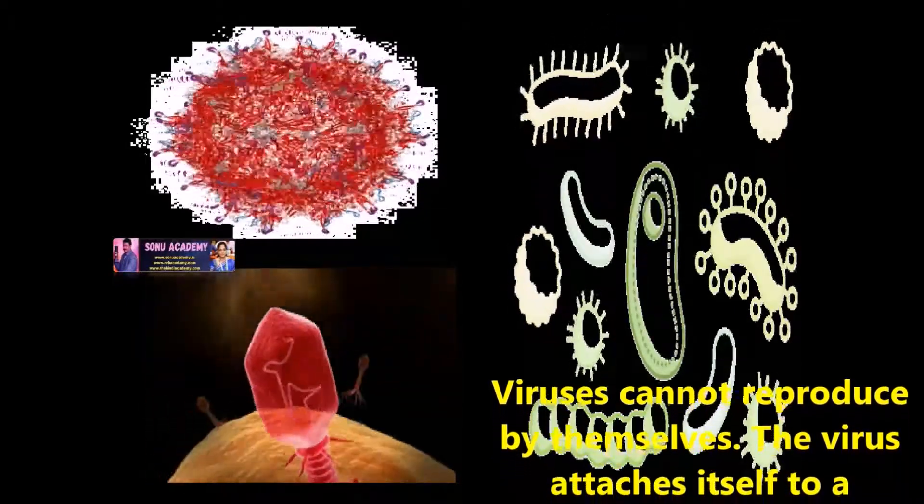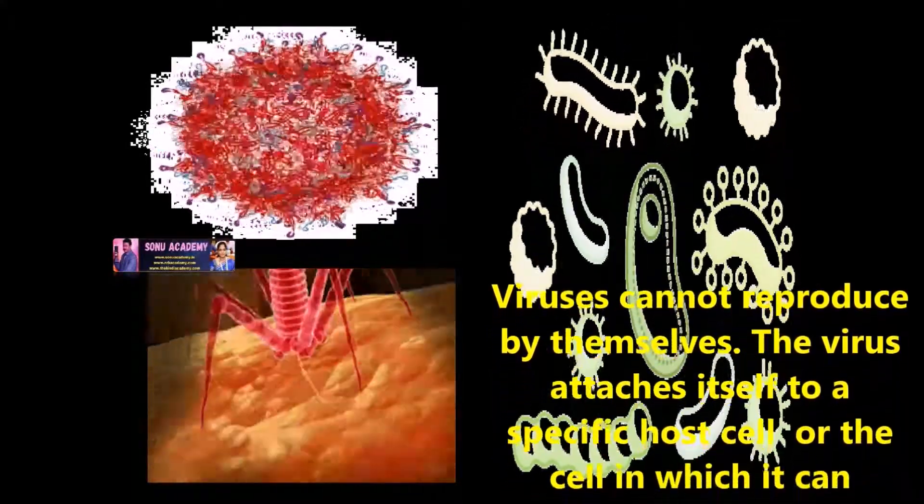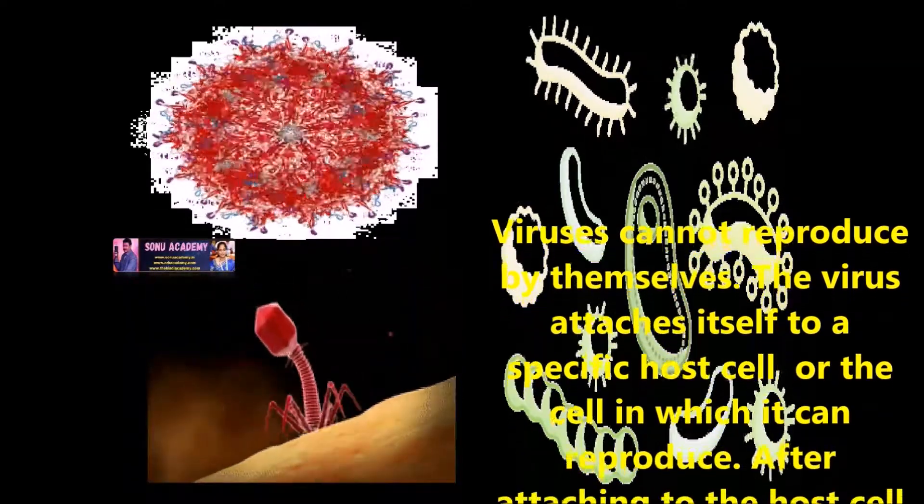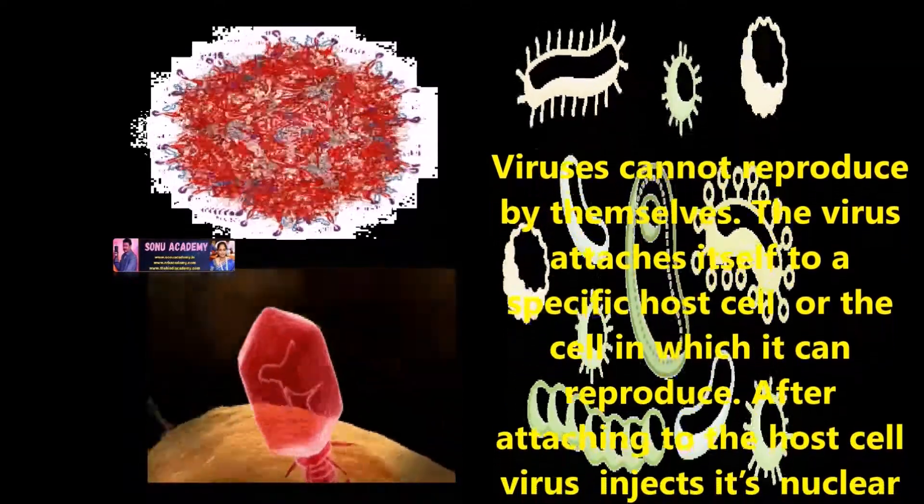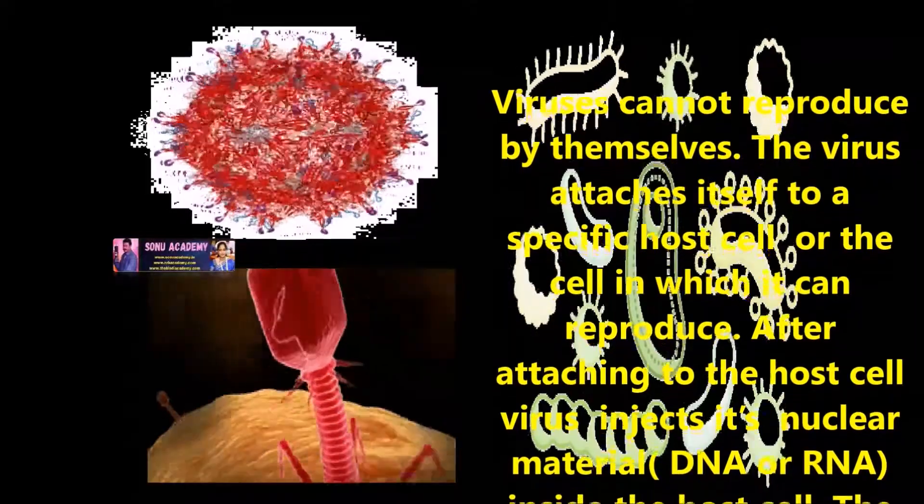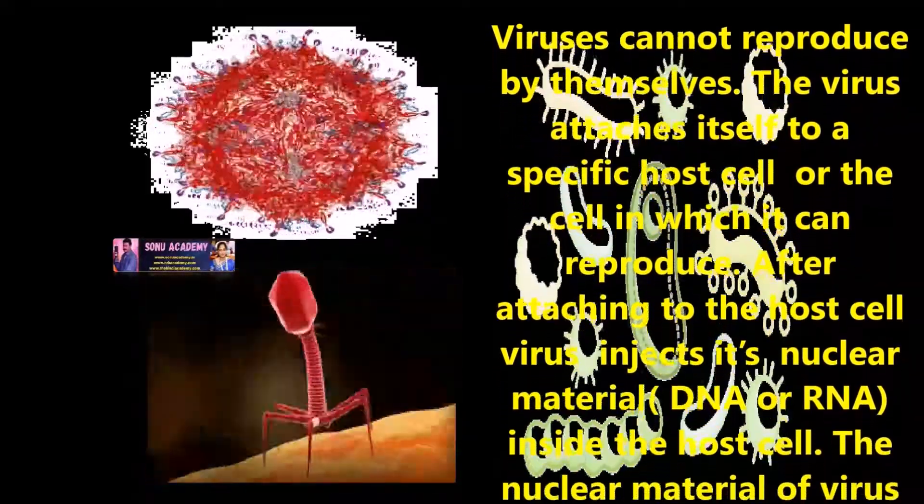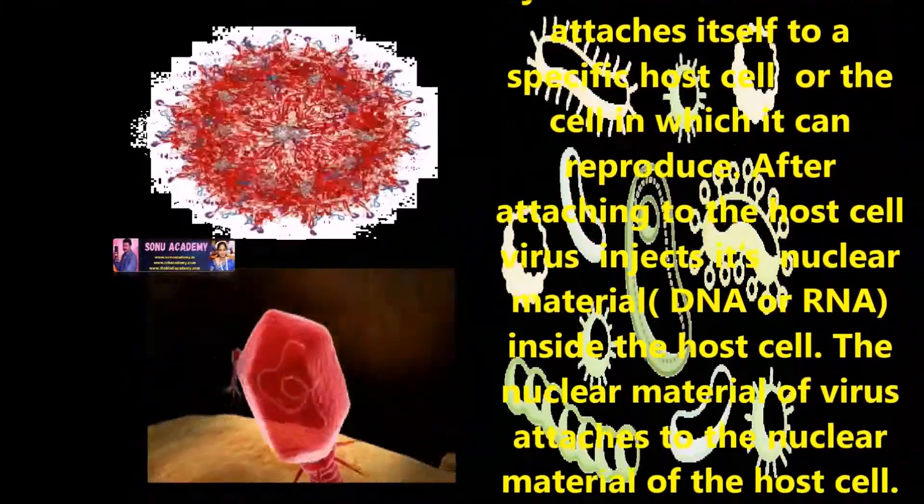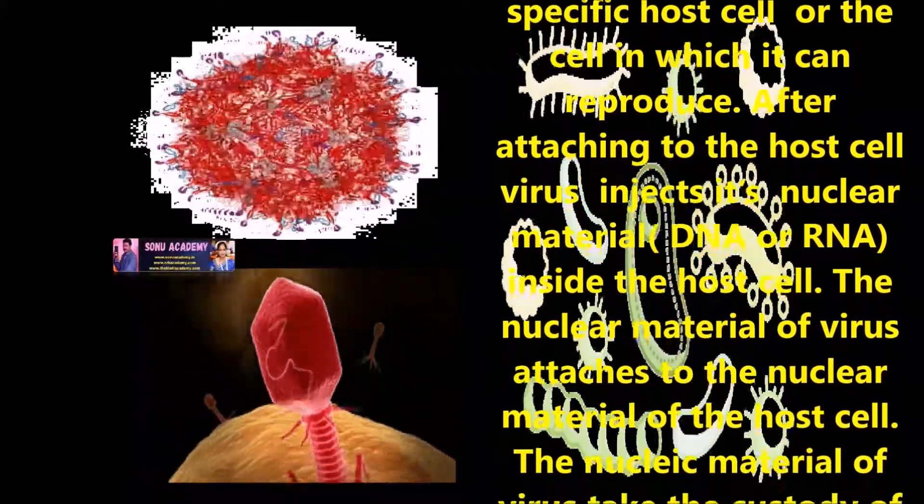Children, now let us discuss how do viruses grow and how viruses reproduce. Children, viruses cannot reproduce by themselves. Viruses attach itself to a specific host cell, or the cell within it can reproduce. After attaching the host cell, virus infects the unit.